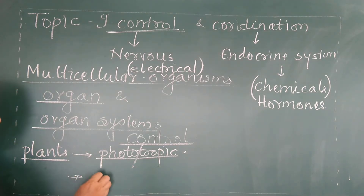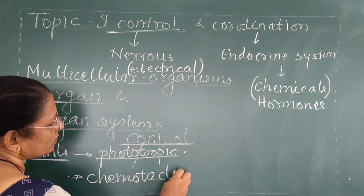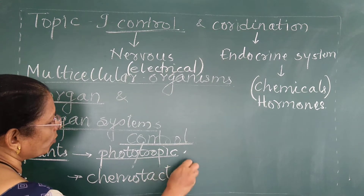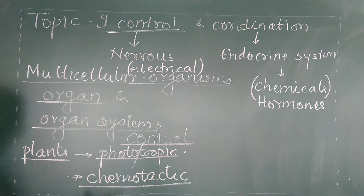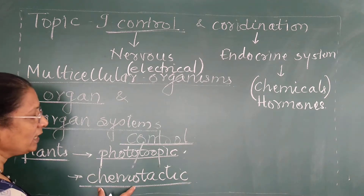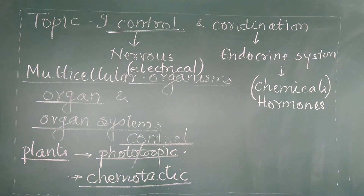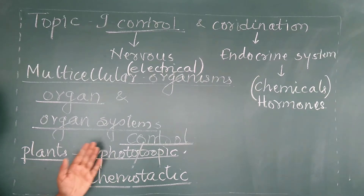In case of plants, chemotactic movements are also seen. These chemotactic movements involve attraction towards chemicals. When movement of a plant organ or plant part occurs due to chemicals, it is called chemotactic. So in case of plants, such types of movements are seen — a response to light and a response to chemicals.